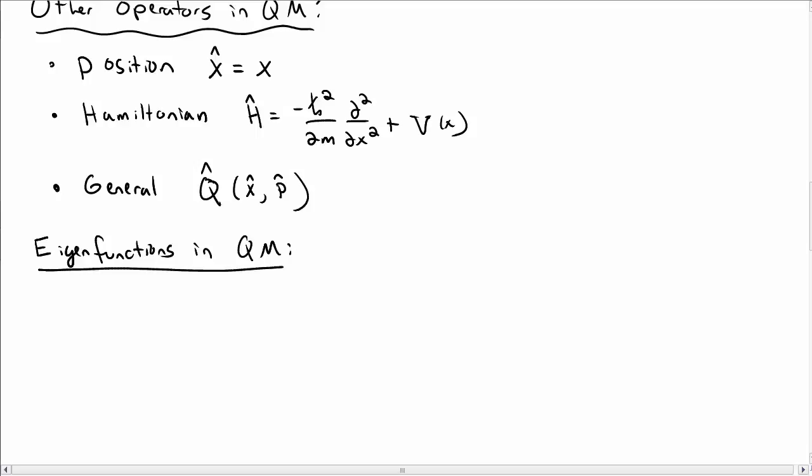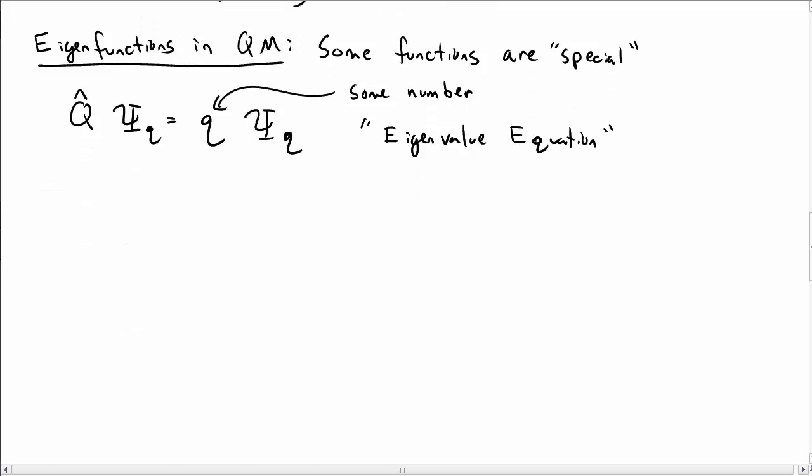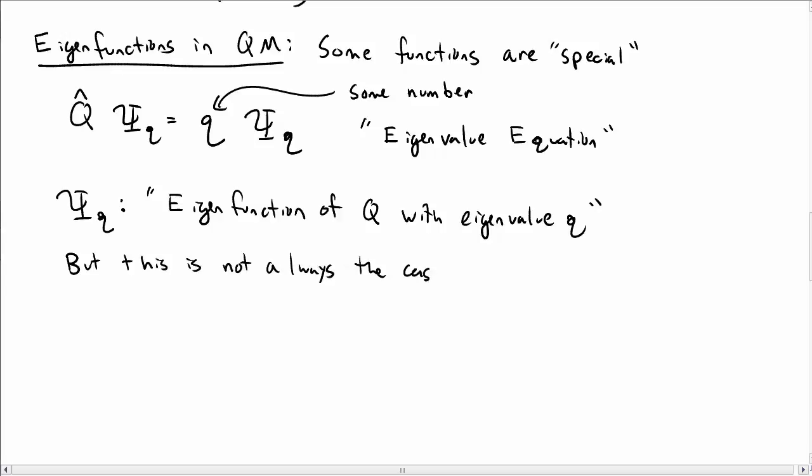Let's talk a little bit about eigenfunctions in quantum mechanics. So there are some functions in quantum mechanics that are special, because if you hit them with an operator, then you get the same wave function back again times some number. So q hat times psi is equal to q times psi. We call this an eigenvalue equation, because it looks very similar to eigenvalue equations in matrix math. We call capital psi the eigenfunction of q with eigenvalue little q, which is why we put a little subscript little q there.